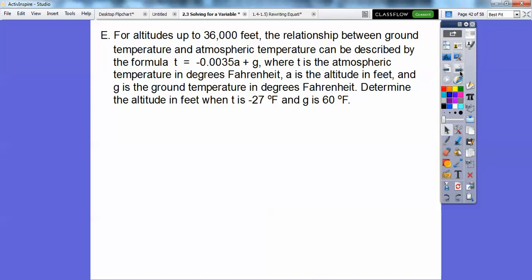Alright you guys, for altitudes up to 36,000 feet, the relationship between ground temperature and atmospheric temperature can be described by the formula T equals negative 0.0035A plus G, where T is the atmospheric temperature in degrees Fahrenheit, A is the altitude in feet and G is the ground temperature in degrees Fahrenheit. So determine the altitude in feet when T is negative 27 degrees Fahrenheit and G is 60 degrees Fahrenheit. Well let's look at this. It says determine the altitude in feet. So we need to solve this equation for A first.